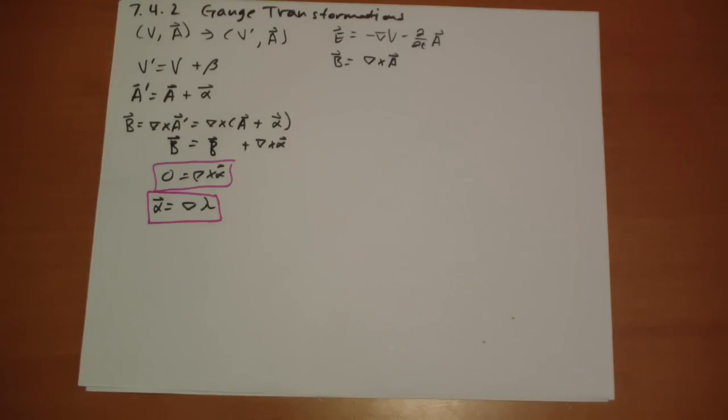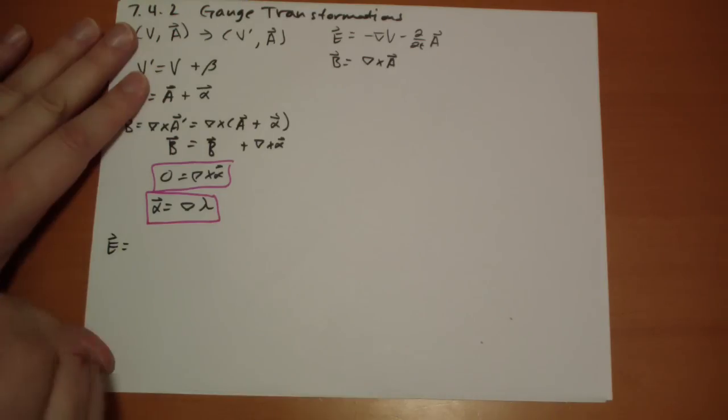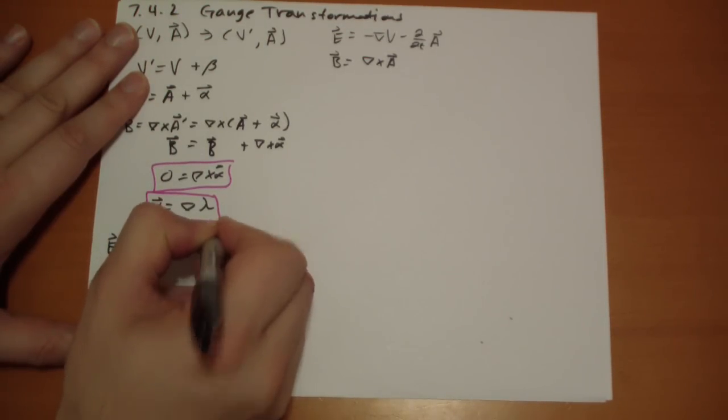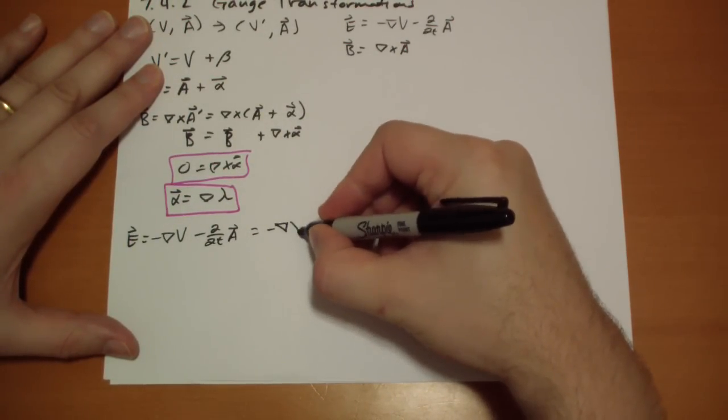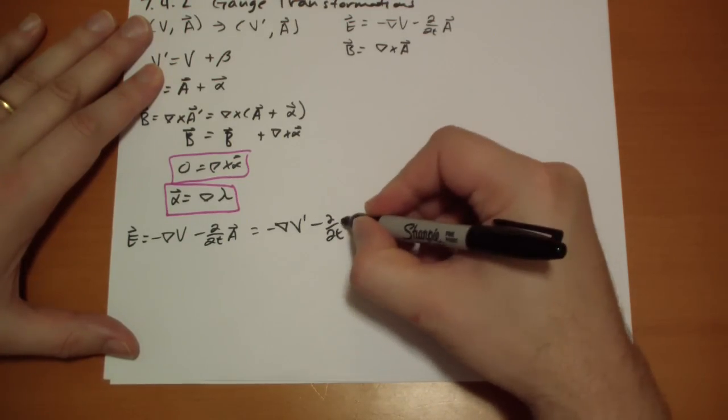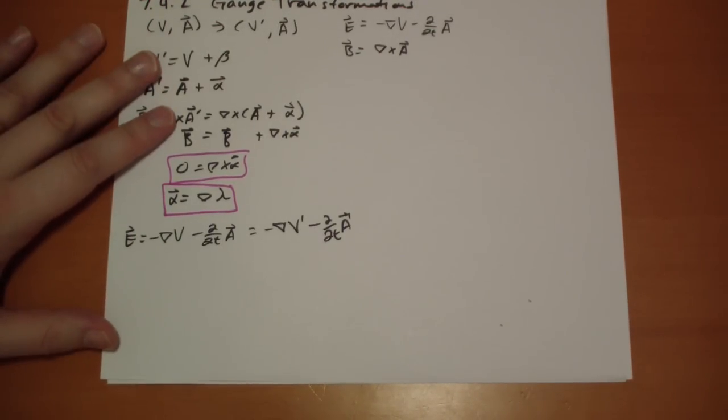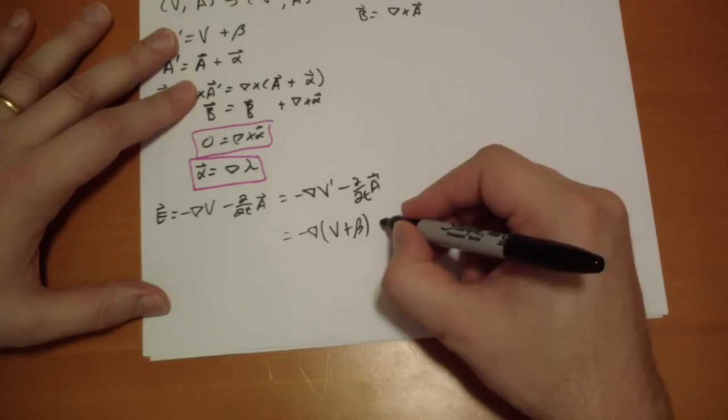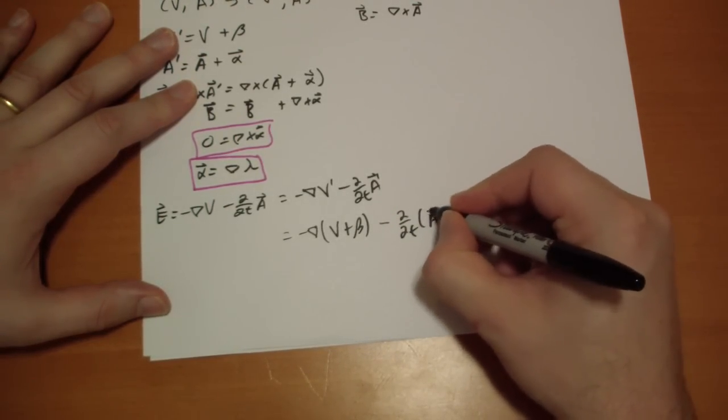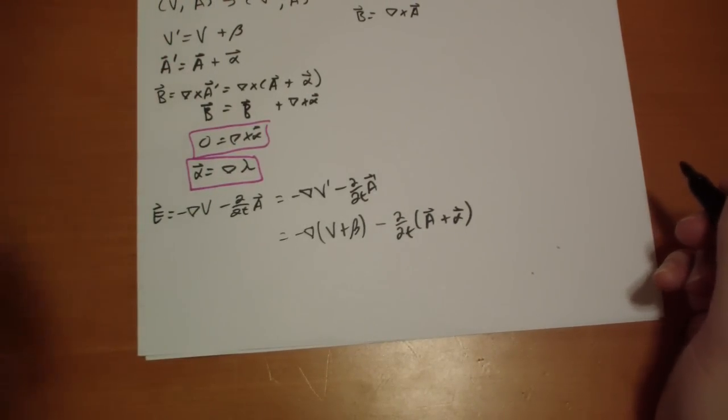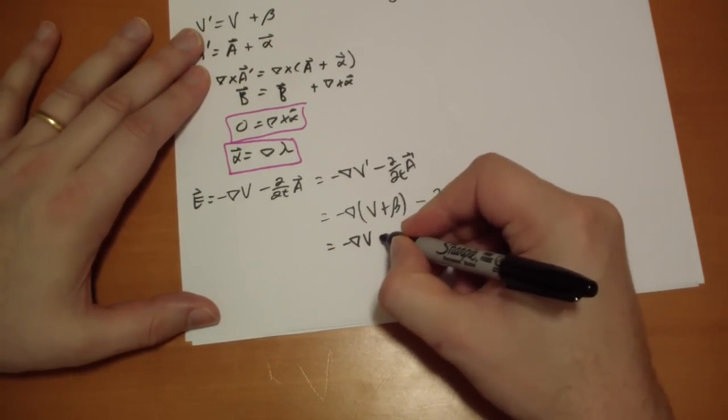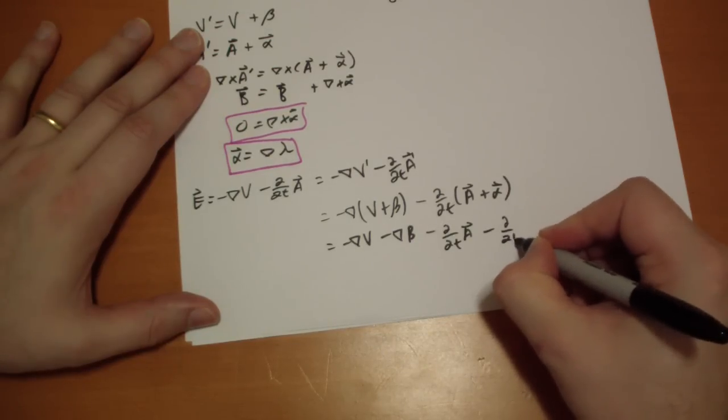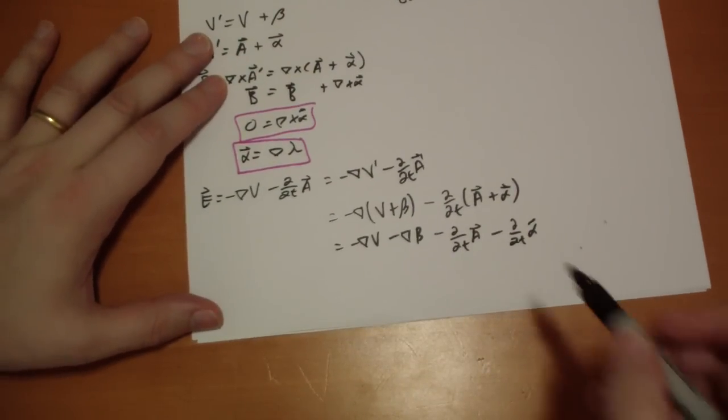For the electric field, so our E field has to stay the same. That has to be equal to negative the gradient of V minus the time derivative of A vector. And we can't have anything change when we introduce our new V and A vectors. Well, this is just minus the gradient of V plus beta. And this is just the time derivative of A vector plus alpha vector. So we can distribute it out and cancel like terms.